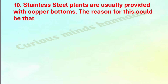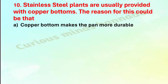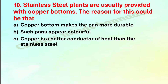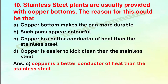Tenth question: stainless steel plates are usually provided with copper bottoms. The reason for this could be — option A: copper bottom makes the pan more durable, B: such pans appear colourful, C: copper is a better conductor of heat than stainless steel, D: copper is easier to clean than stainless steel. The correct option is C: copper is a better conductor of heat than stainless steel.